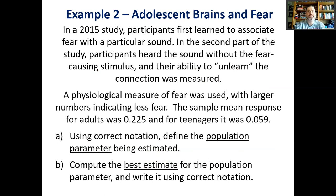In a 2015 study, participants first learned to associate fear with a particular sound. In the second part, they heard the sound without the fear-causing stimulus and their ability to unlearn the connection was measured. A physiological measure of fear was used, with larger numbers indicating less fear. The sample mean response for adults was 0.225 and for teenagers it was 0.059. Parts A and B are the same as the previous example — we break this down and figure out what the population or populations are.